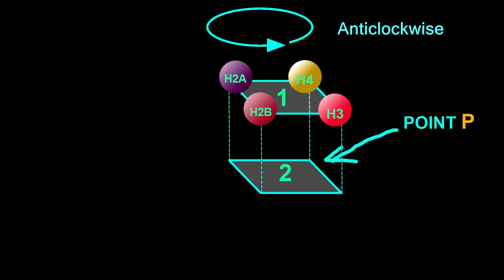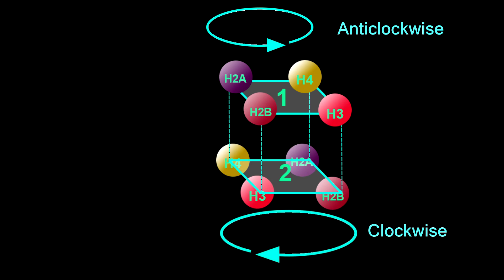Likewise, in another plane from point P, those histone proteins are arranged clockwise in this manner: H2A, H2B, H3, and H4.